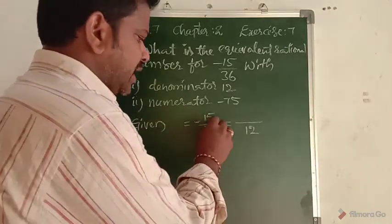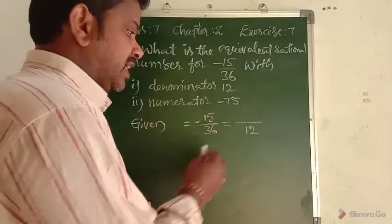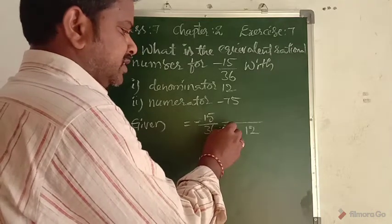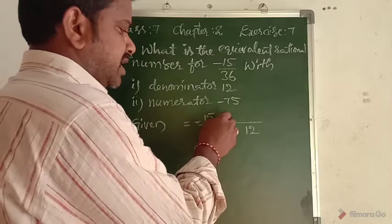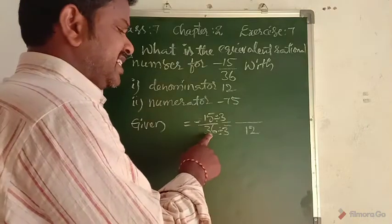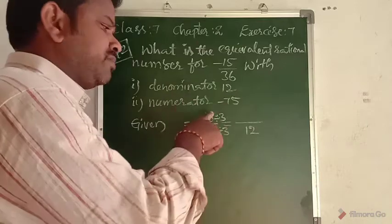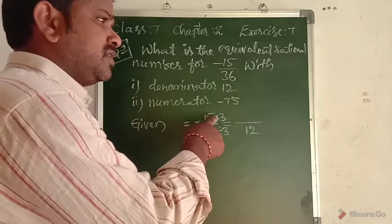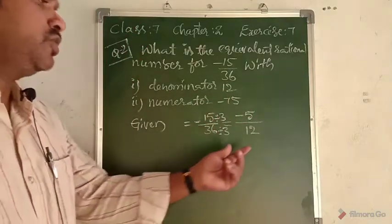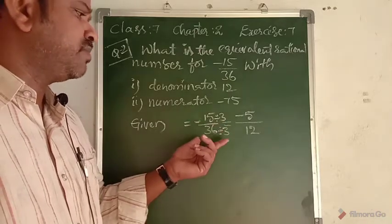What number should 36 be divided by to get 12? It is divided by 3. So the numerator is also divided by 3. When 36 is divided by 3 we get 12 as the denominator, and at the same time 15 divided by 3 gives us minus 5 as the numerator. So the denominator is 12.